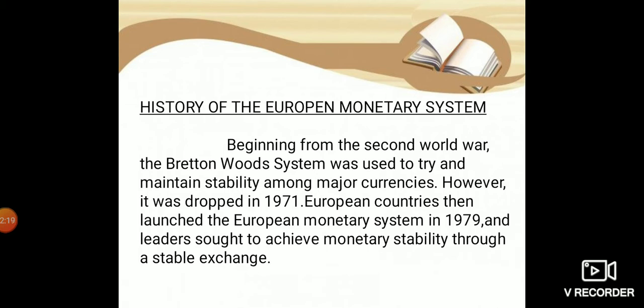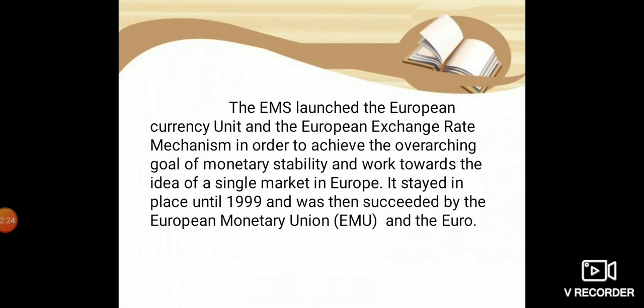In 1979, European countries launched the European Monetary System. The main goal was monetary stability and working towards the idea of a single market in Europe. The European Monetary Union subsequently succeeded the European Monetary System.